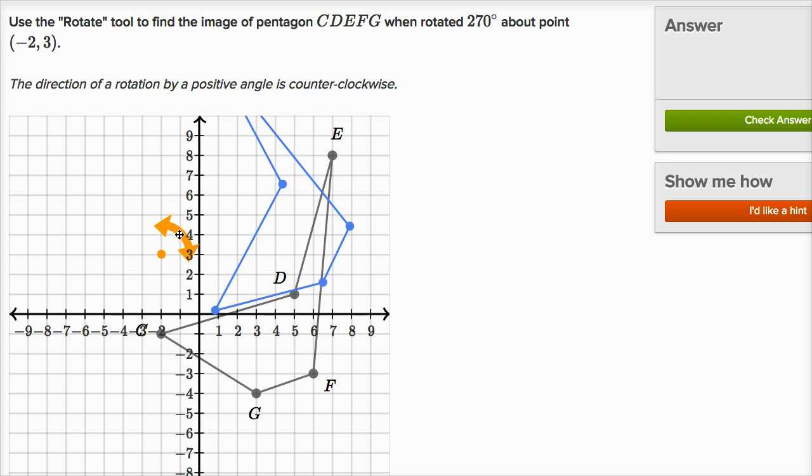So if I move this arrow up here, I have rotated 90 degrees, positive 90 degrees. We're moving counterclockwise.